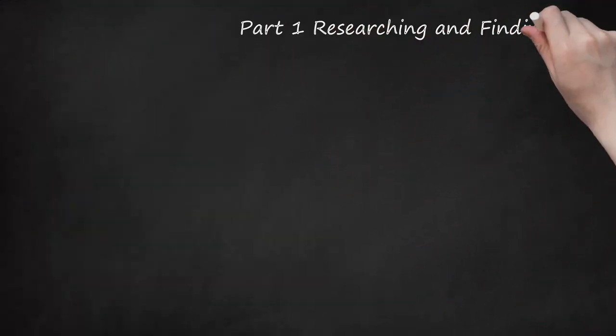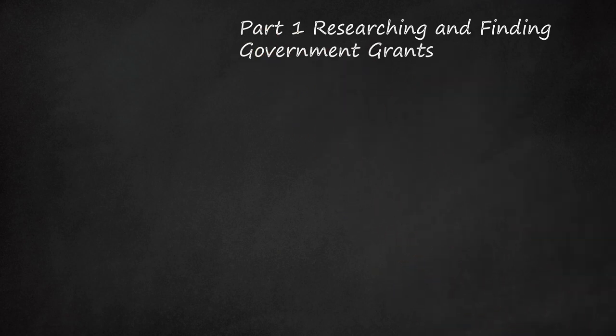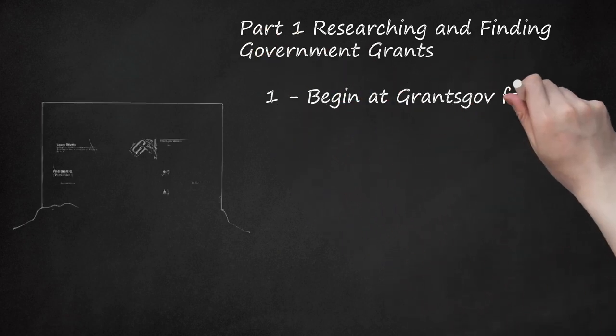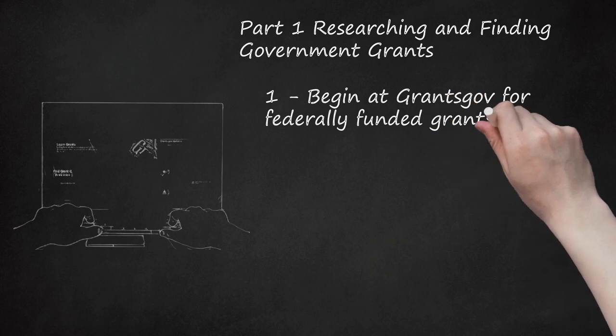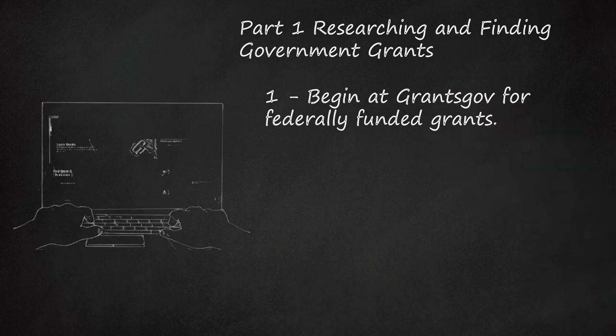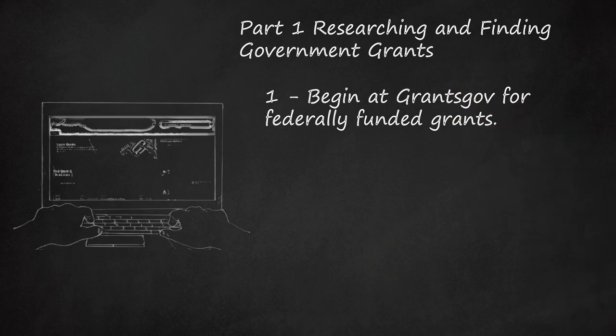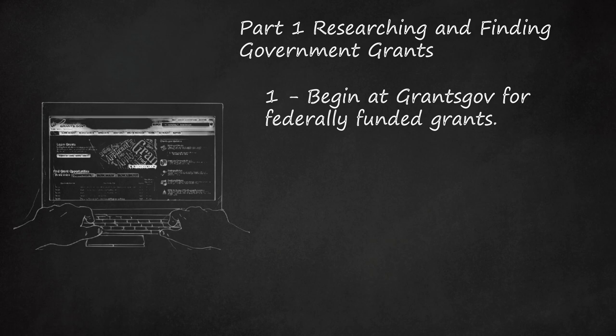Part 1: Researching and Finding Government Grants. Step 1: Begin at Grants.gov for Federally Funded Grants. In the United States, the central clearinghouse for federal grants is the website Grants.gov. This site is maintained by a private organization, USA.gov, which was put into place under President Clinton to provide the public with easy access to many governmental functions. It provides a current listing of a wide variety of government grants, with information about eligibility and applying.